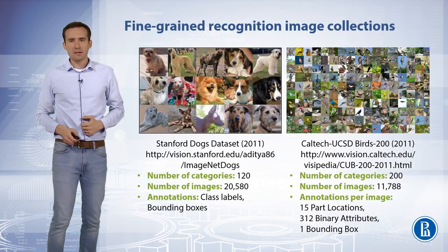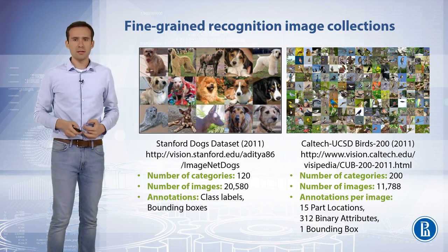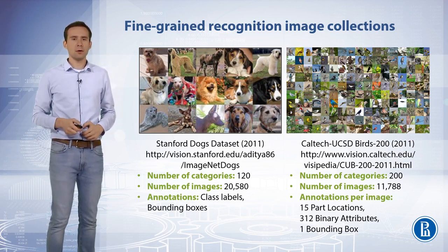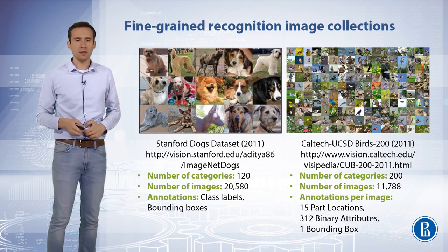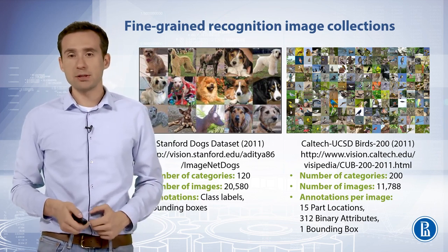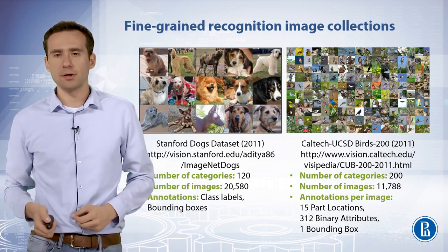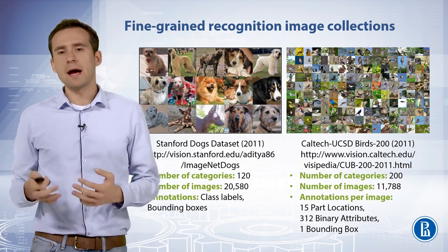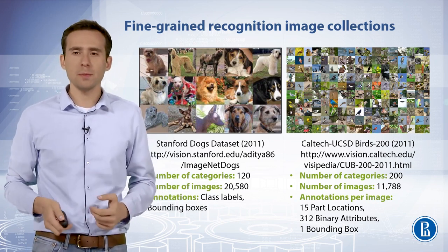A number of datasets are available to train and evaluate fine-grained categorization models. The Stanford Dogs dataset contains over 20,000 images of 120 breeds of dogs from around the world, built using images and annotations from ImageNet. Another challenging collection is Caltech UCSD Birds, featuring images of birds as well as additional attribute and part annotations, the use of which we will cover now.